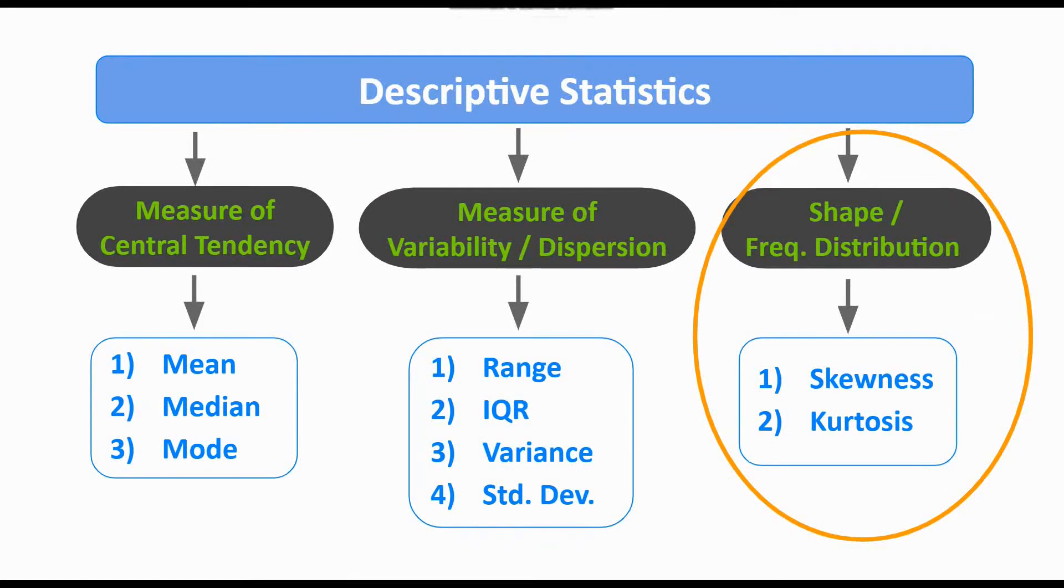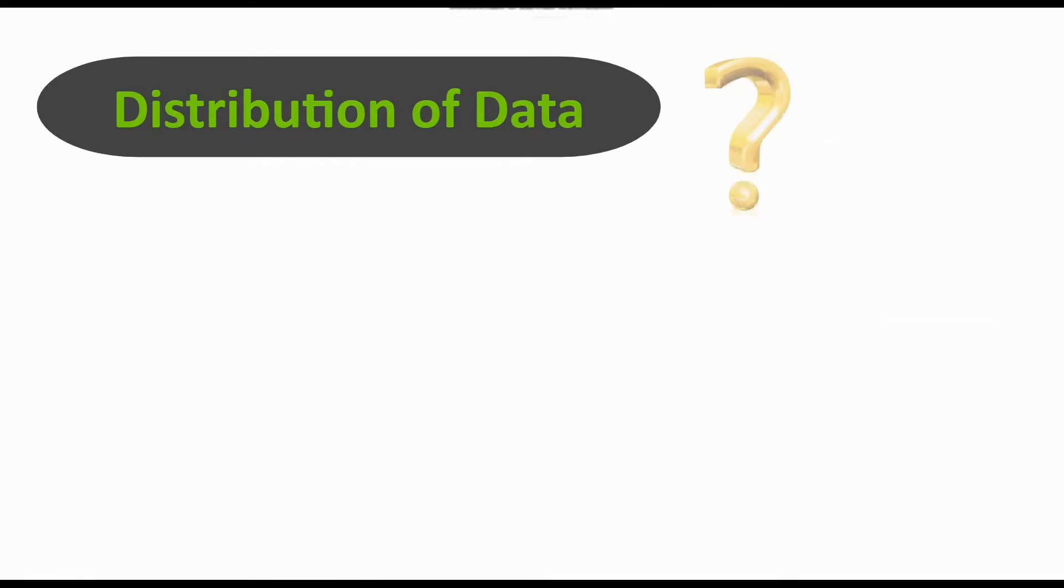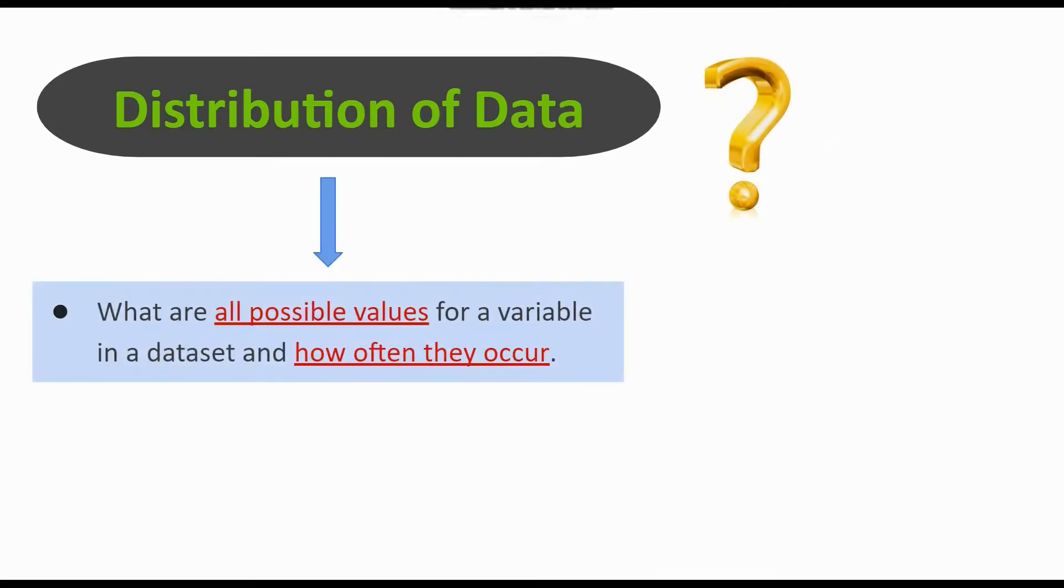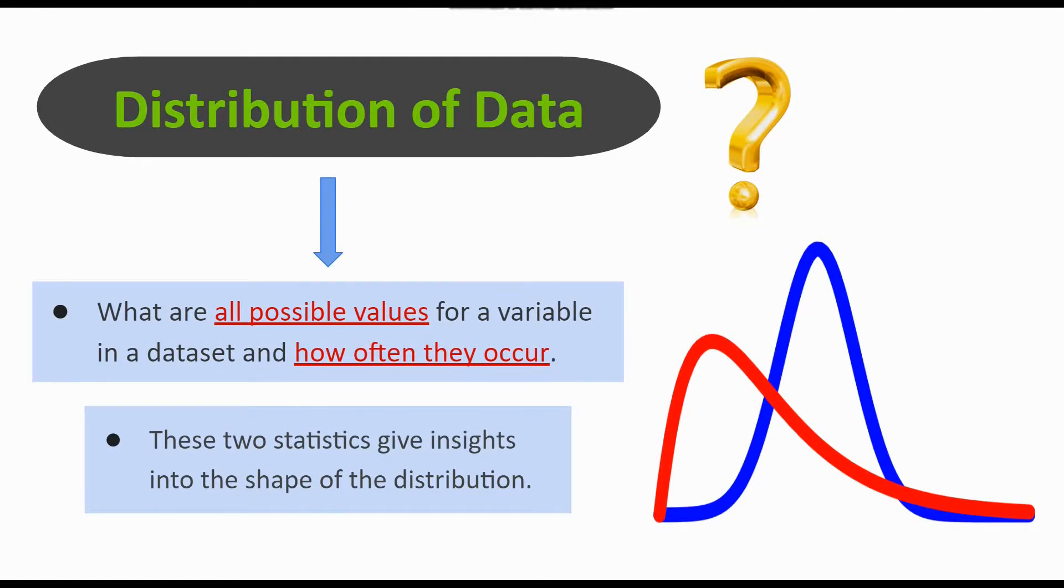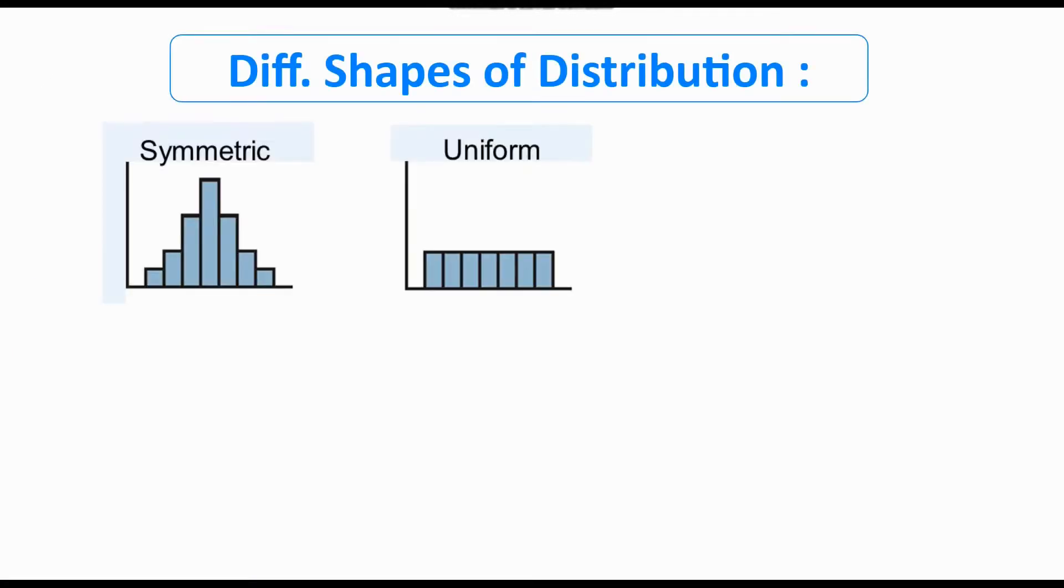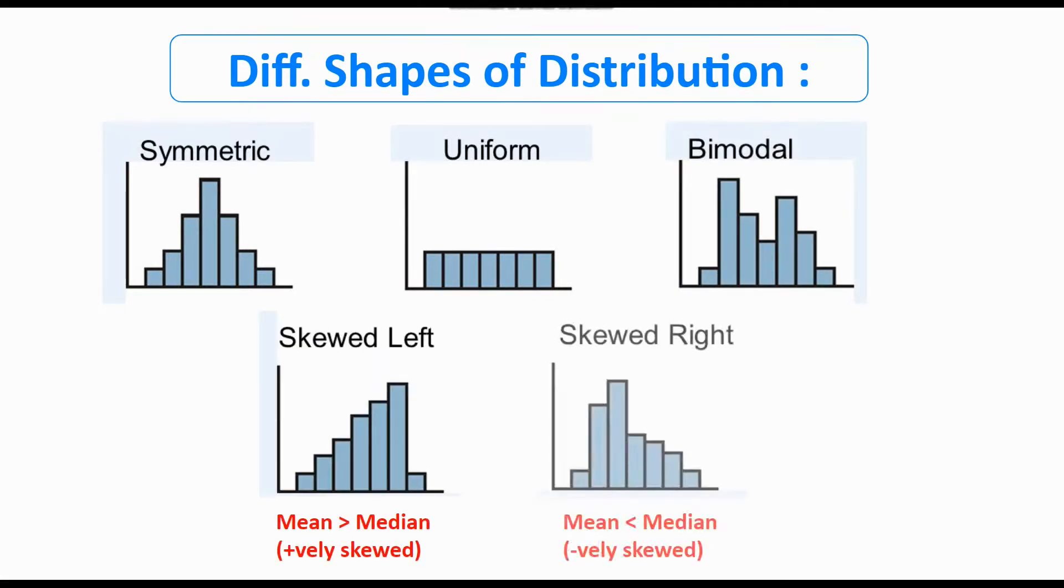Before that, let's understand the term distribution. It tells you what are all possible values you have for a given variable in your dataset and how often they occur, the frequency. These two together give you the shape of the distribution - whether it's symmetric, uniform, bimodal with two peaks, or skewed left or skewed right. So we have different shapes of distribution.